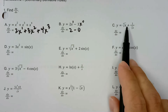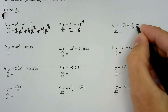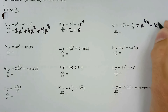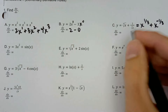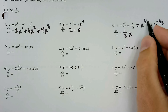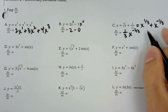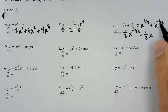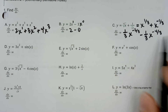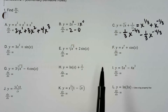y equals cube root of x plus 1 over cube root of x. I'm going to call that x to the 1/3 plus x to the negative 1/3. Then I'm going to apply the derivative power rule — bring the power around the front, subtract 1 from the power. So 1/3 minus 3/3 is negative 2/3. Then plus negative 1/3 times x to the negative 1/3 subtract 1; negative 1/3 minus 3/3 is going to be negative 4/3.